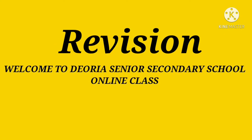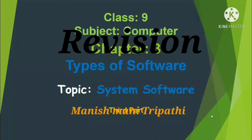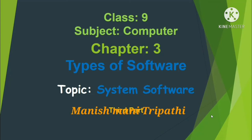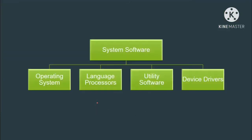Hello and good morning to all, welcome to your DSS online class. Now, third chapter, class ninth, types of software — system software. Topic: system software. We have already discussed operating system and language processors. Now today we will discuss about utility software. This class you are not writing today. Now let's start.